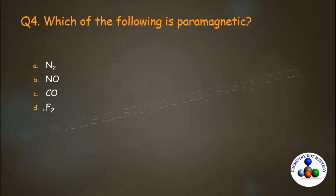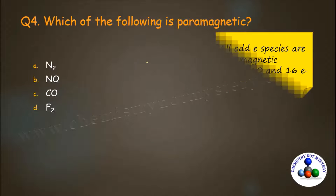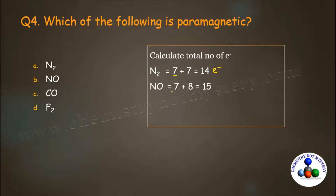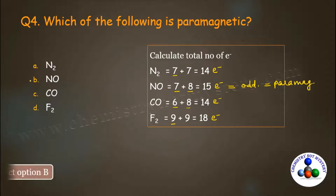The fourth question: which of the following is paramagnetic? The trick for paramagnetism: all odd-electron species are paramagnetic, except 10-electron and 16-electron species. Calculate total electrons: N2 has 14, NO has 15 (nitrogen 7 + oxygen 8), CO has 14 (carbon 6 + oxygen 8), and F2 has 18 (9 + 9). Only NO is an odd-electron species, so NO will be paramagnetic. Option B is the right answer.